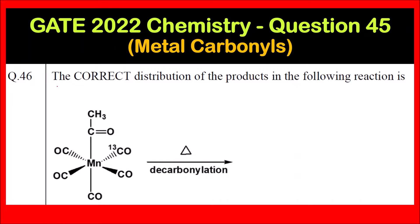The question is: the correct distribution of the products in the following reaction is. A complex is given and what we have to do is decarbonylation — meaning removal of the CO ligand.